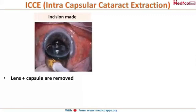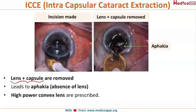The main essence of ICCE is that the lens along with the capsule is removed as a whole — the entire lens along with its capsule. This leads to a condition called aphakia, that is, absence of the lens. To manage this, you will have to prescribe very high power convex lenses, which have their own adverse effects.